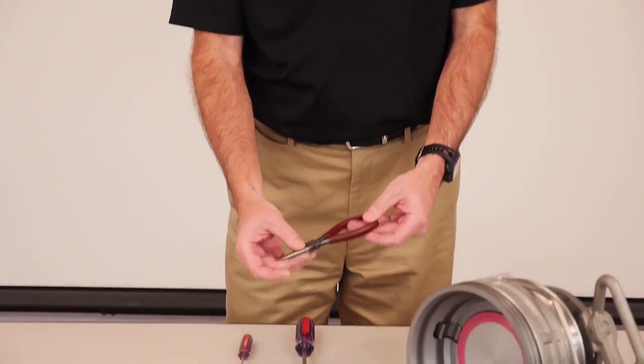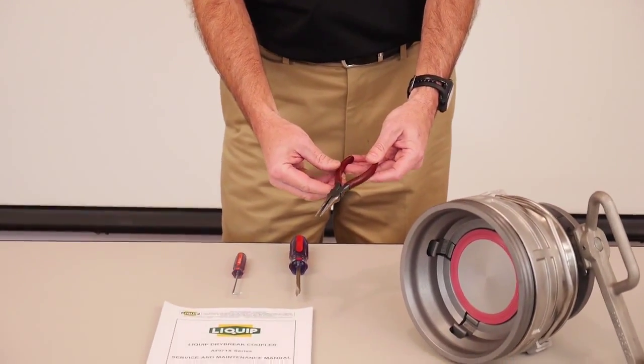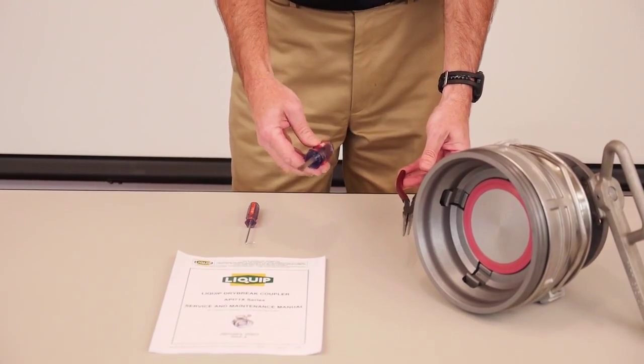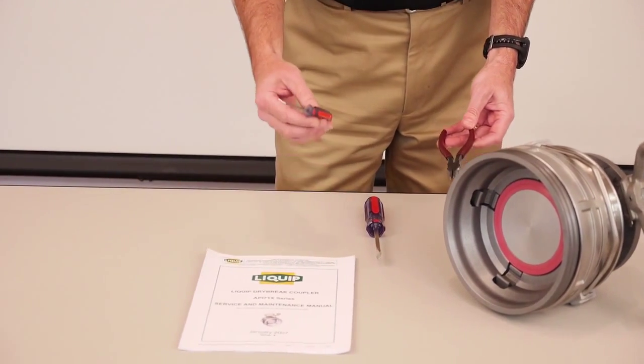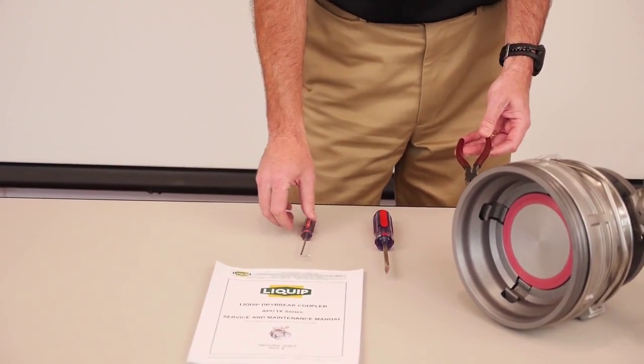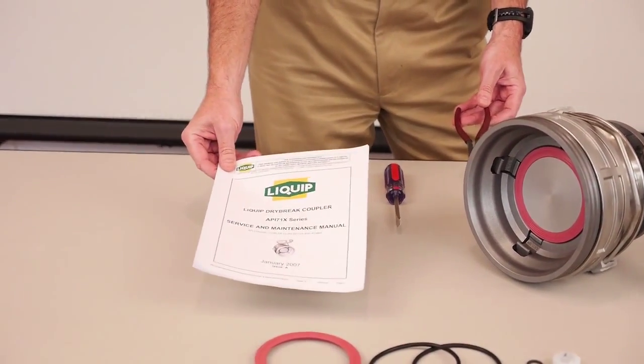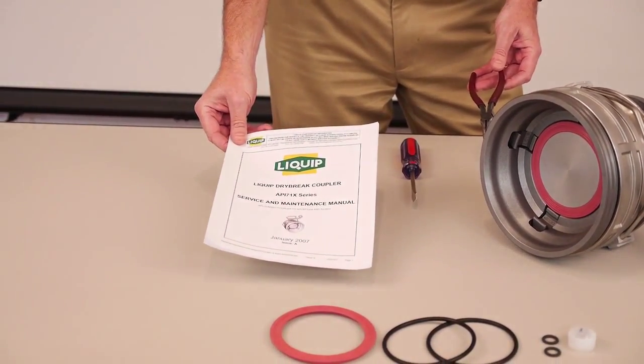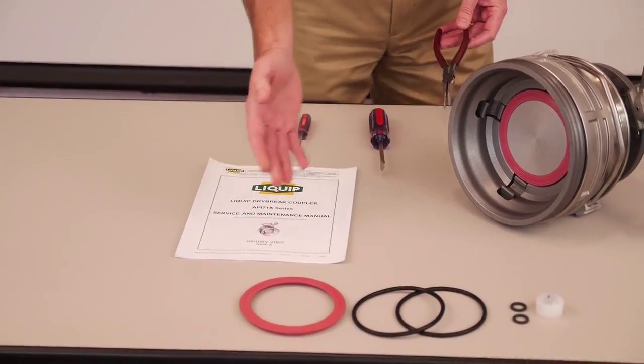A pair of standard needle nose pliers, a flat head screwdriver, and a seal pick. Your product manual, which you can download from our website, and a seal kit.